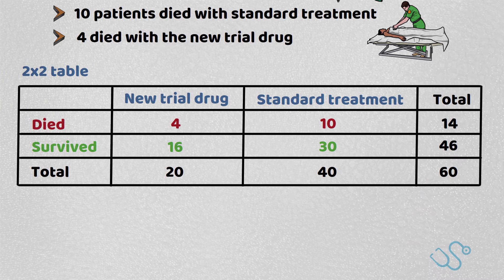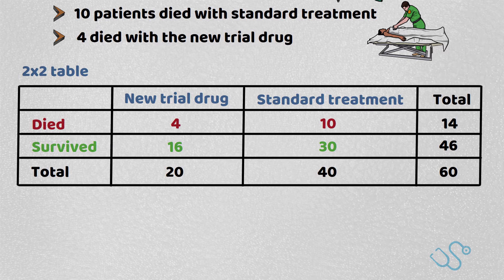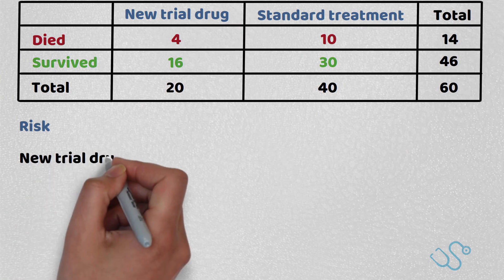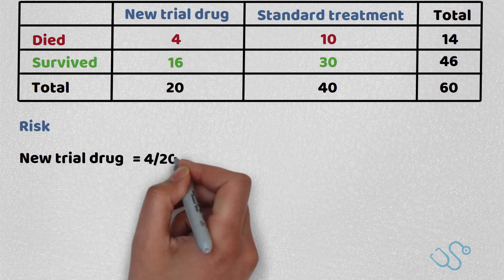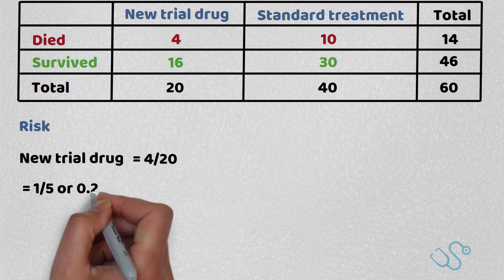Now to the meaty bit. To work out risk, remember we said that it's a probability of an event occurring out of the total. So the risk of the new trial drug would be 4 out of 20, which equals 1 out of 5, or 0.2.